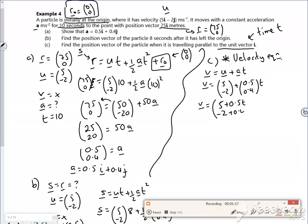Right then, so parallel to the i means that the J component is equal to zero. So -2 + 0.4t = 0, 0.4t = 2, and then t is 2 over 0.4. Is that going to give us 5 seconds? Now five seconds, there we go.